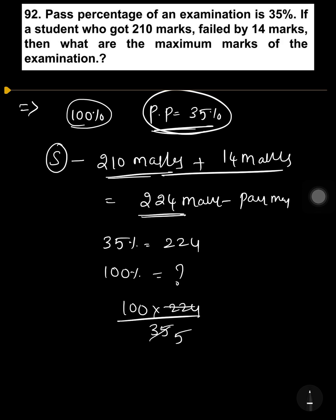Calculating: 100 times 224 divided by 35 equals 640.